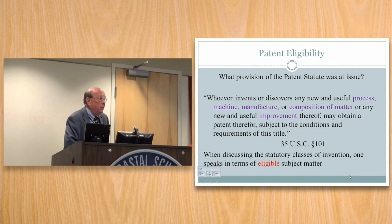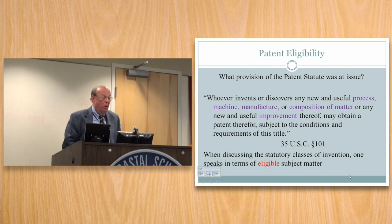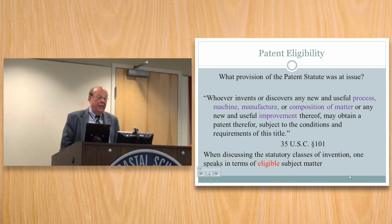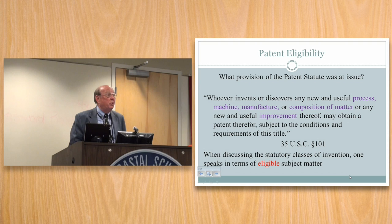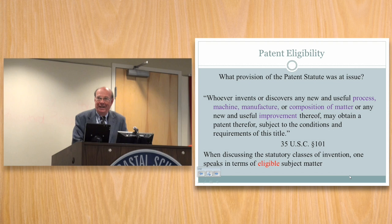What are we talking about? Part of the patent statute was at issue — Section 101. We've heard about 103; we're going back. Section 101 says: whoever invents or discovers any new and useful process, machine, manufacture, or composition of matter, or any new and useful improvement thereof, may obtain a patent subject to the conditions and requirements of this title. One of those extra requirements is non-obviousness.